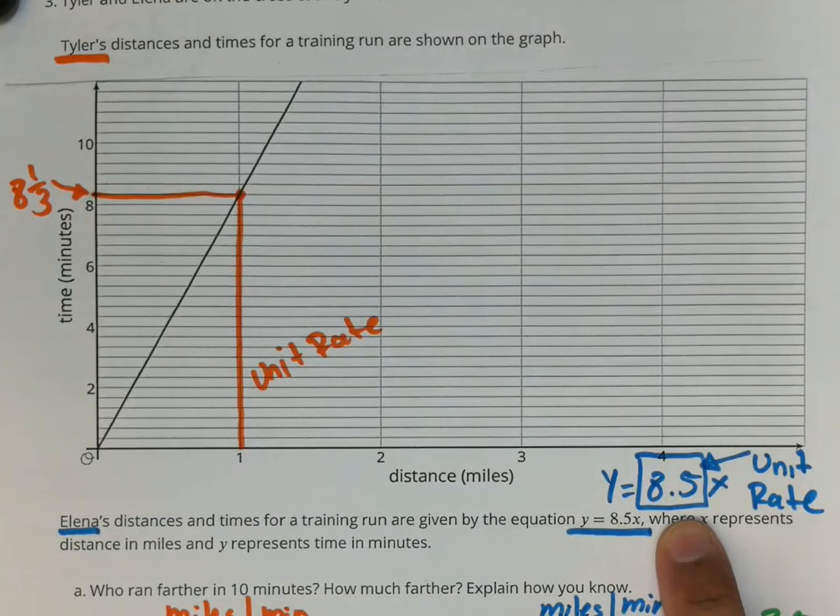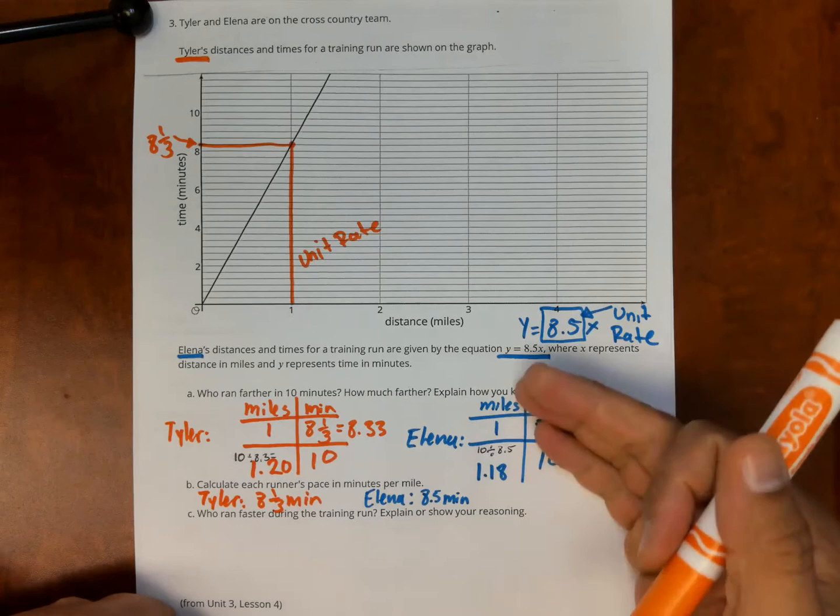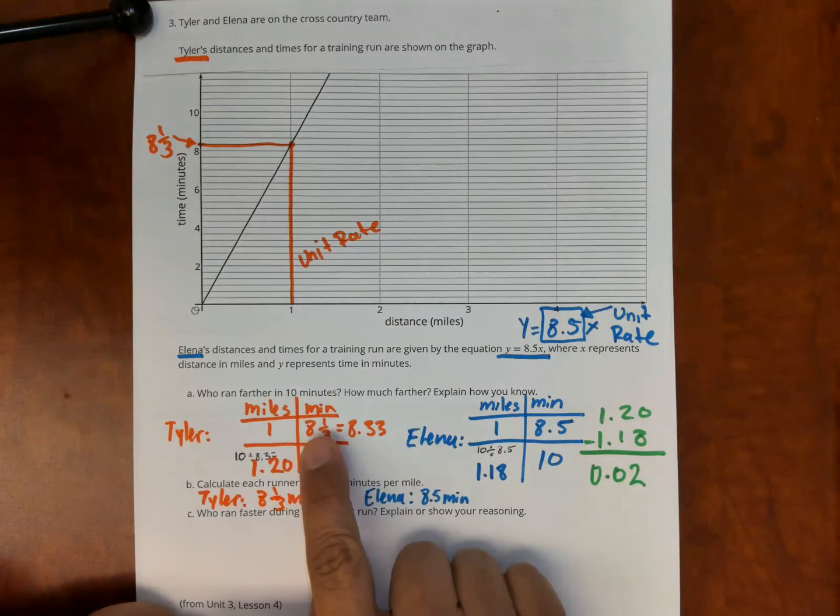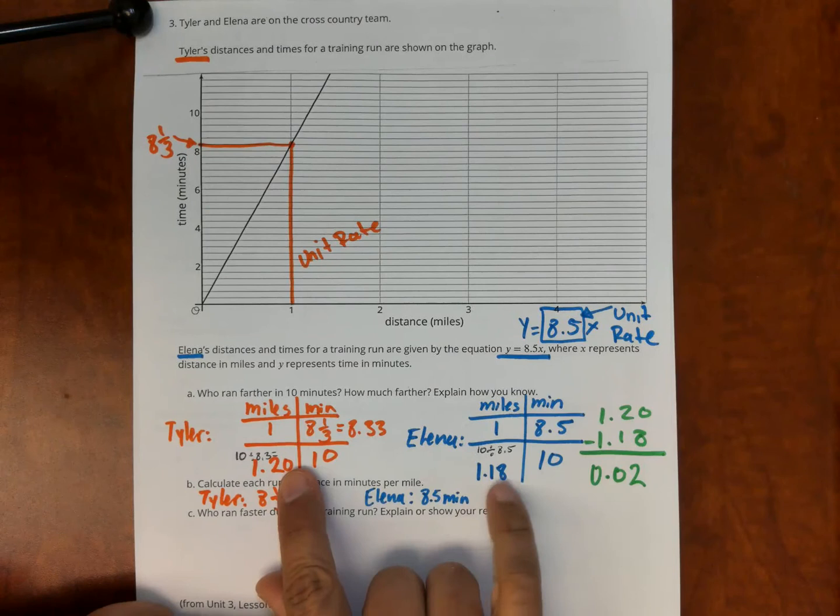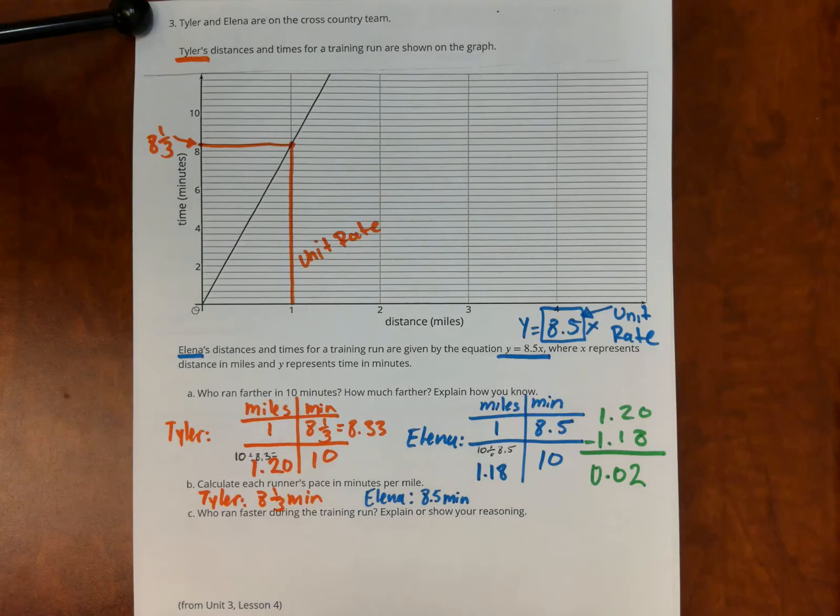And then question C, who ran faster during the training run? This is actually a very easy question with all the work that we've done so far. So we know here that Tyler runs faster than Elena. It takes him less time to run a mile when they do one mile. When we saw 10 minutes, you see here, Tyler ran more than Elena. So if Tyler runs faster in one mile and runs faster at 10 miles, then Tyler will run faster.